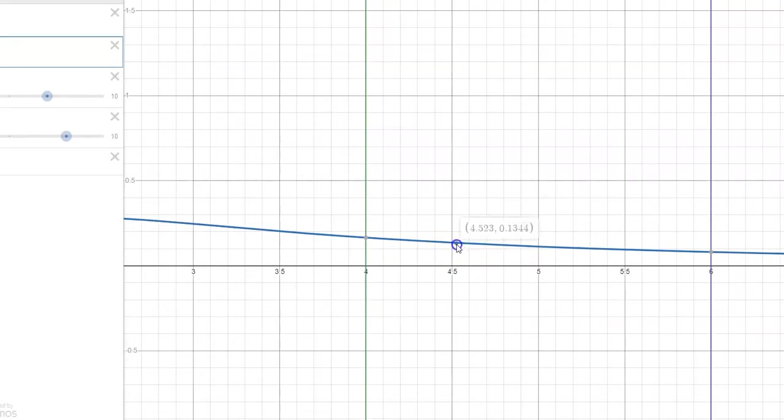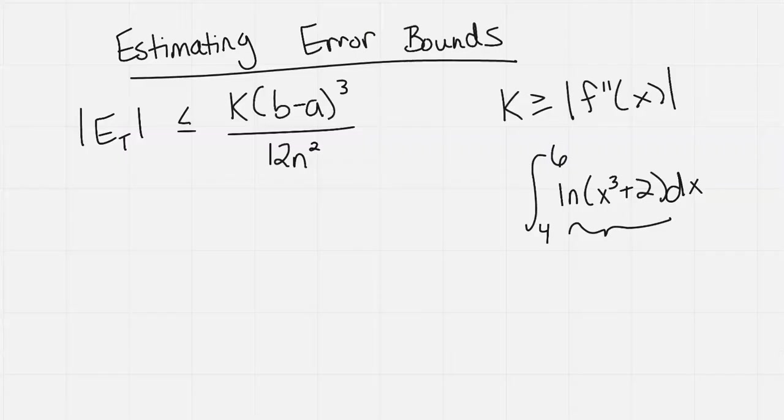Okay, now that this blue graph here is actually the f double prime x, the absolute value of it. And here is my 4 and my 6 for my a and my b. And so the max value on that interval is right here, the y value of 0.1653.